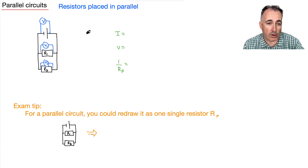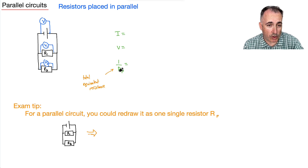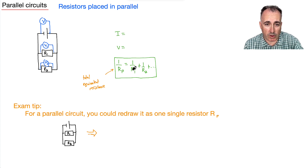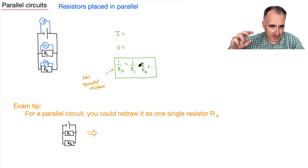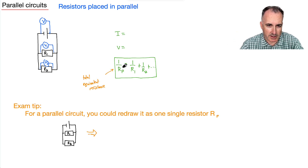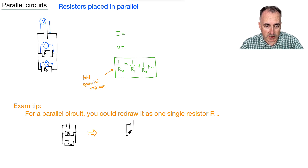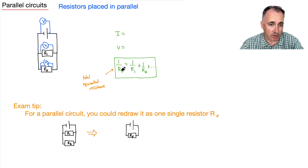For the total equivalent resistance in parallel, this is so important — it's 1 over RP, not just RP. That's where people make so many mistakes. It's going to be 1 over R1 plus 1 over R2 plus dot dot dot. So if you have a one-ohm and a two-ohm resistor, you do 1 over 1 plus 1 over 2, but that answer is 1 over the parallel resistance — you then have to flip the whole thing to get RP by itself.